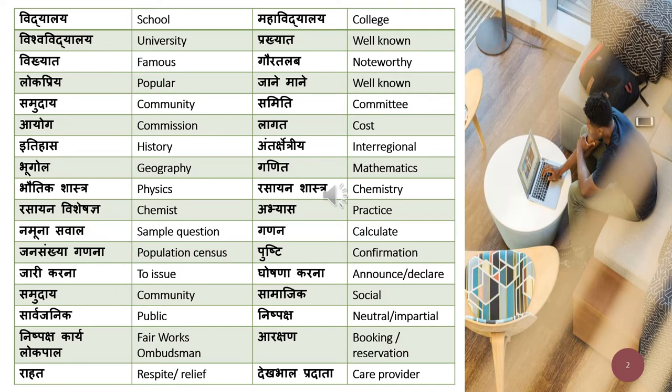This is going to be a small set of words for this video. The first word is 'vidyalay' — school. You can also use the same word 'school' in your translation to Hindi, but when you use 'vidyalay' it will create a better impression on the examiner. So: vidyalay is school, maha vidyalay is college, vishwa vidyalay is university.